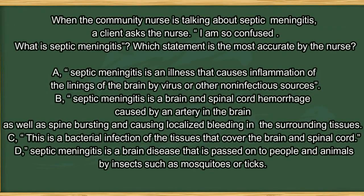Next question. When the community nurse is talking about septic meningitis, a client asks, 'I'm so confused, what is septic meningitis?' Which statement is most accurate by the nurse? A. Septic meningitis is an illness that causes inflammation of the linings of the brain by a virus or other non-infectious sources. B. Septic meningitis is a brain and spinal cord hemorrhage caused by an artery in the brain busting and causing localized bleeding in the surrounding tissues. C. This is a bacterial infection of the tissues that cover the brain and spinal cord. D. Septic meningitis is a brain disease passed on to people and animals by insects such as mosquitoes or ticks.